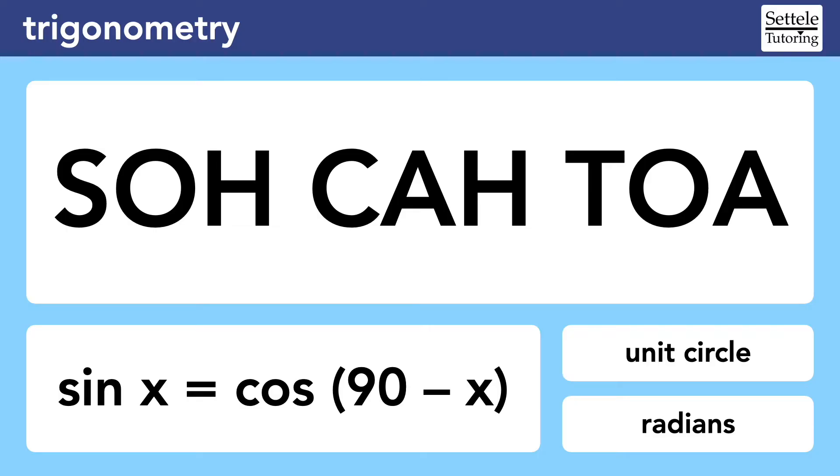Occasionally, you may need to use the formulas for complementary angles, such as sine of x is equal to cosine of 90 minus x, which I'll also cover in this lesson. Very few questions ask about the unit circle or radians. I will cover those topics in separate lessons.